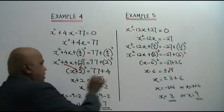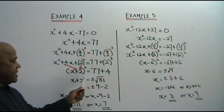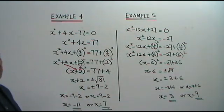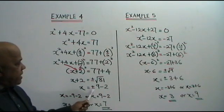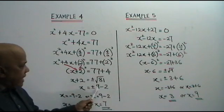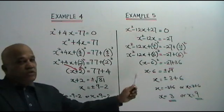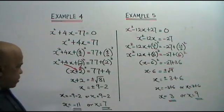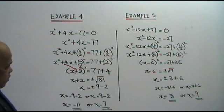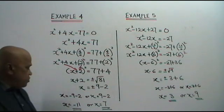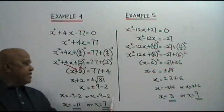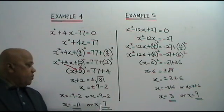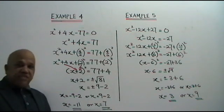x plus 2 equals the square root of 81, plus or minus. Therefore, you get x equals to plus or minus 9, minus 2 — bring to the other side. So you get x equals negative 9 minus 2 equals negative 11, or x equals 9 minus 2, where x equals 7.